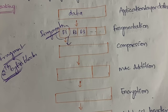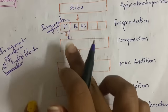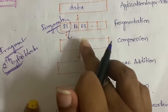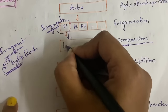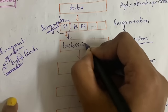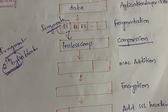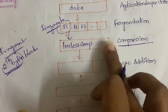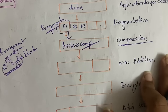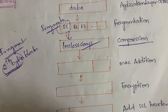Once you divide the data into fragments, for each and every fragment the same process is followed. You take one fragment and for that fragment you need to do data compression. You know what data compression is - you are reducing the size of the data. This compression has to be lossless compression. In compression we have two types: lossy compression, where some small data loss can happen, and lossless compression, where data loss will not happen but the size of the data is still compressed.